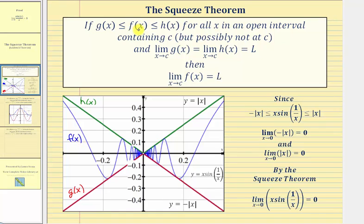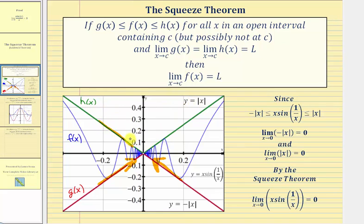So again, first notice that f of x is always greater than or equal to g of x, this lower function, and f of x is also less than or equal to h of x, this top function. And also the limit as x approaches zero of g of x equals zero, which we can verify graphically — using g of x as we approach zero from the left and the right, notice how we are approaching a function value of zero. And the limit as x approaches zero of h of x also equals zero. Again, as we approach x equals zero from the left and the right on h of x, we're once again approaching the same function value of zero. And therefore, it follows the limit as x approaches zero of f of x also equals zero.